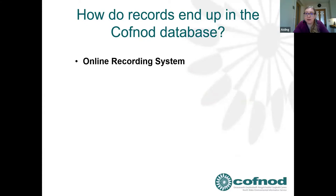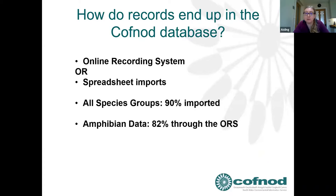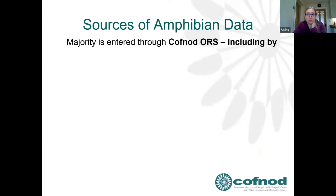Records end up in the COFNOD database via an online recording system or by importing spreadsheets. Across the whole database, 90% of data is imported from spreadsheets, but for amphibian data it's almost entirely the reverse — 82% goes in through the online recording system. This is really good because it removes issues of misinterpretation and means records are available immediately to people who need access.